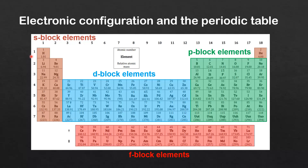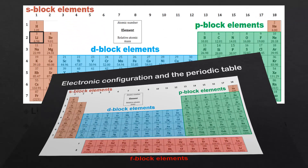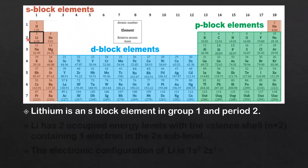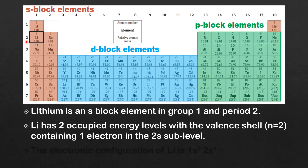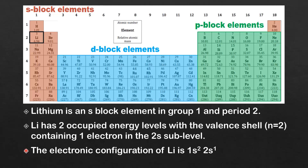Next we look at how the electronic configuration of an element can be deduced from its position in the periodic table. Starting with lithium: lithium is an S block element in group 1 and period 2. It has 2 occupied energy levels, with the valence shell N=2 containing 1 electron in the 2S sublevel. So the electronic configuration of lithium is 1S2, 2S1.